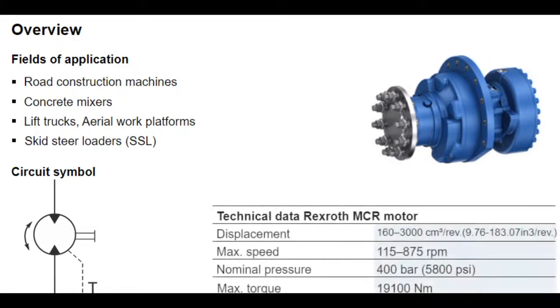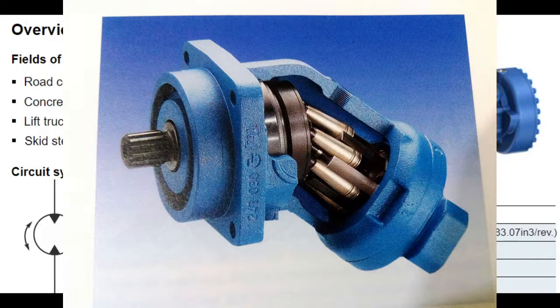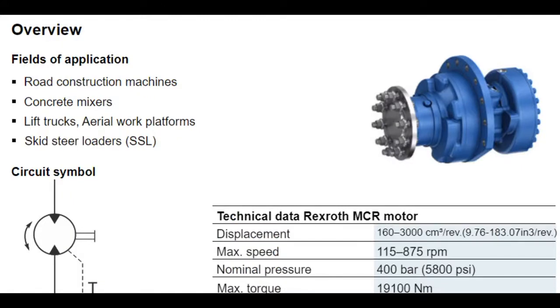MCR radial piston motors come with displacements between 160 to 3,000 cubic centimeters per revolution. They operate at a maximum speed of 115 to 875 revolutions per minute and a nominal pressure of up to 400 bar, 5,800 psi. MCR radial piston motors can output a maximum torque of up to 19,100 Newton meters, depending on size.